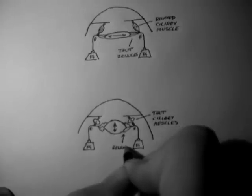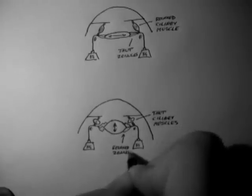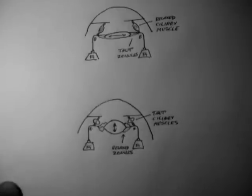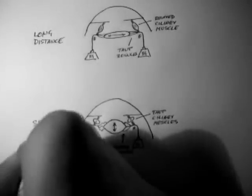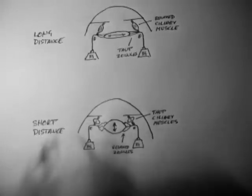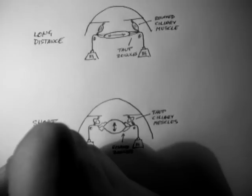And this allows the lens to bulge. So this is what we use when we're looking at objects at a long distance, and this is what we use when we're looking at objects at a short distance. And that's ciliary muscle contraction.